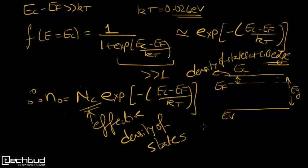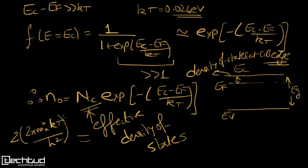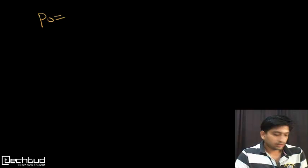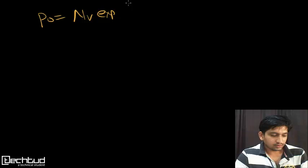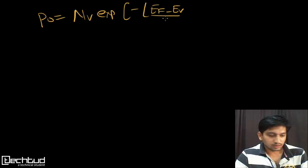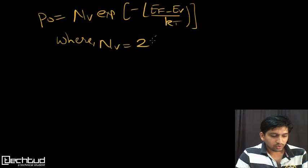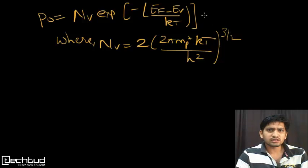The effective density of states NC is given by 2 times (2 pi times MN_star times kT divided by h squared) to the power of 3/2, where MN_star is the effective mass of electrons. Similarly, the hole concentration P0 is given by NV times exponential of minus(EF minus EV) divided by kT, where NV equals 2 times (2 pi times MP_star times kT divided by h squared) to the power of 3/2, with MP_star being the effective mass of holes.